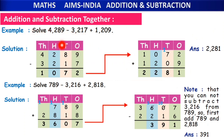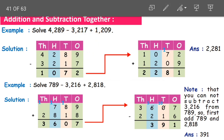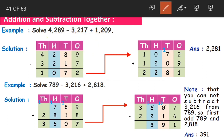Now look at the example: solve 4289 minus 3217 plus 1209. Both symbols are given here — the one we need to subtract as well as the one we need to add. So how do we do that? It is very simple, children.